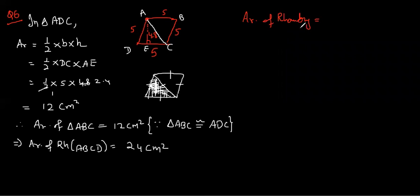Can you tell me? Sir, half into d1 into d2, diagonal one into diagonal two. That we have learned in the last class. What is the area of rhombus? We have 24, so I'll put the value. 24 over here, half into diagonal one. So one of the diagonal is eight, that we have read just now. I guess now you can find diagonal two.